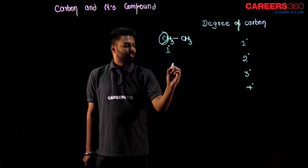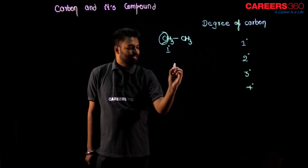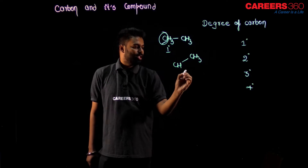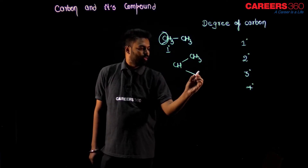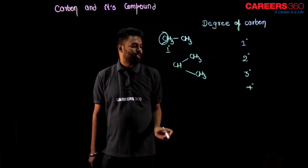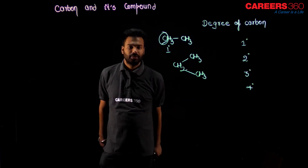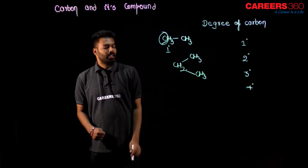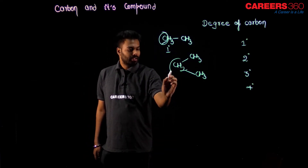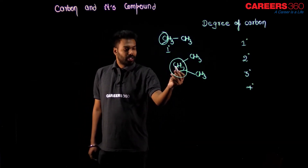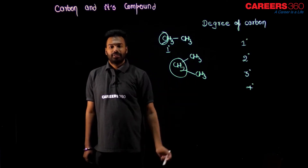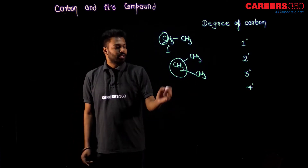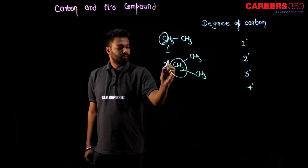Let us see more examples. Suppose I write CH3 CH2 CH3. If I ask about the degree of this middle carbon (CH2), how many carbons are directly connected to it? There are two carbons touching this carbon directly. It means this carbon's degree is two degree.